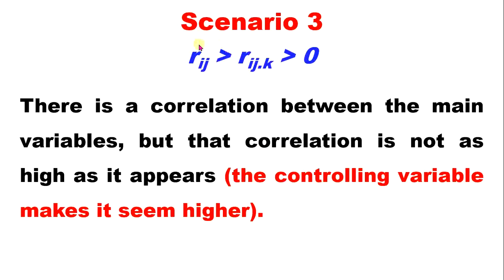The other scenario: the zero-order correlation — the Pearson correlation without controlling — if R of I and J is greater than R of I, J, K, and both are still greater than zero, there is a correlation between the main variables, but that correlation is not as high.